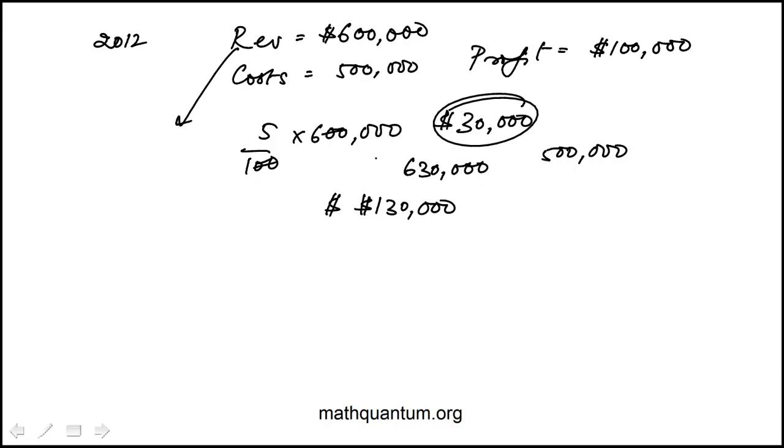Now they're asking what was the percent change in the company's profit. So $130,000 increased from $100,000 increases $30,000, and we need to find $30,000 as a percentage of the original.